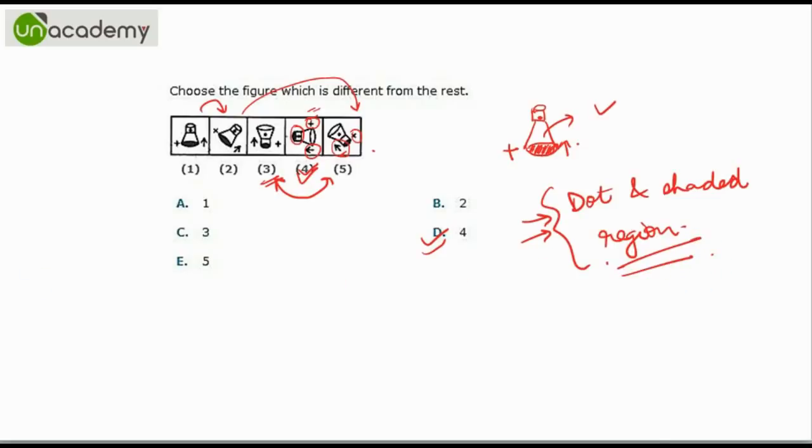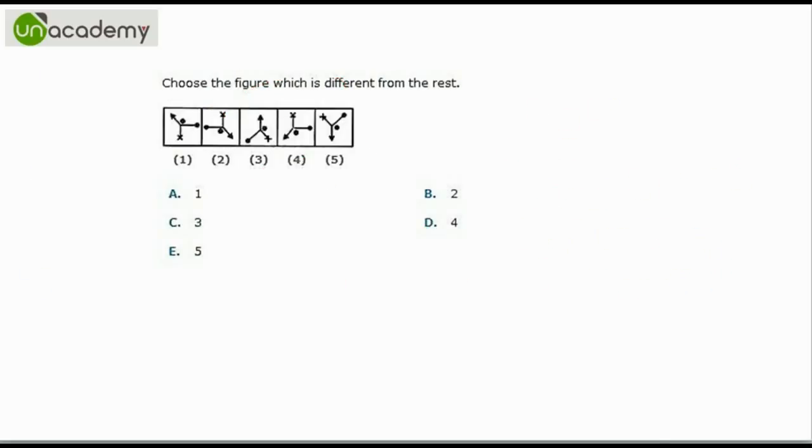Now let us see one more. We are given three lines having a dot in between: an arrow, a dot, and a cross.